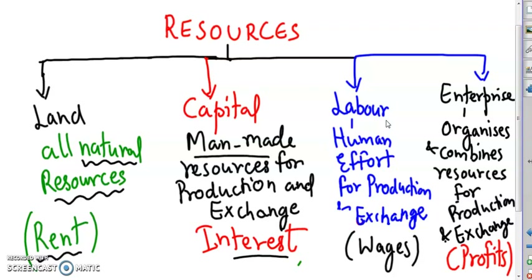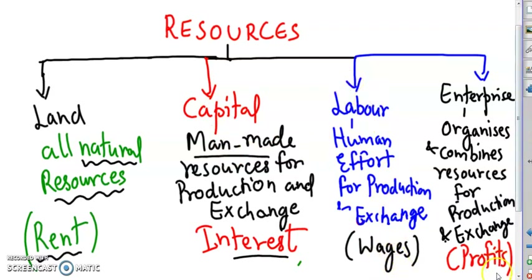What are the rewards for these resources, which are also called the factors of production? Rent for land, interest for capital, wages or salaries for labour, and enterprise gets the profit.